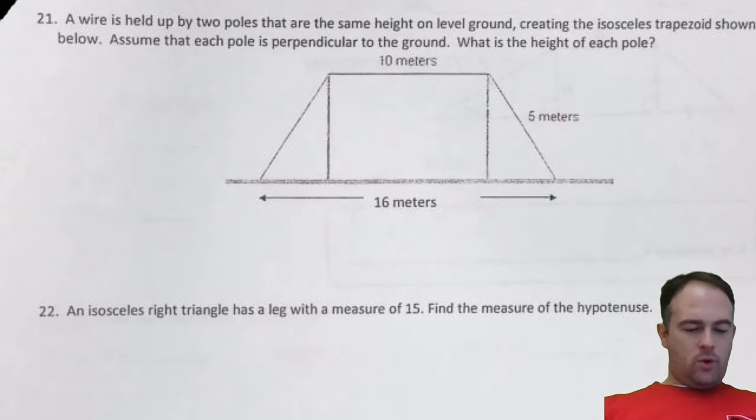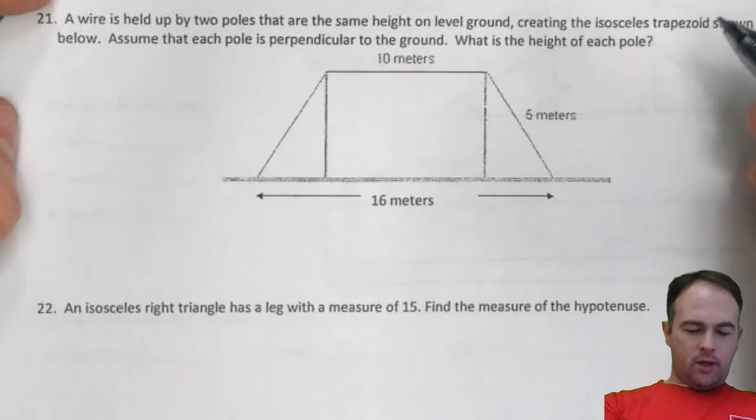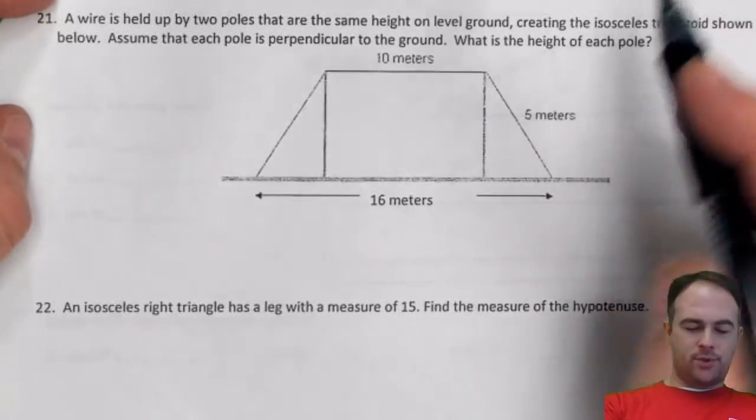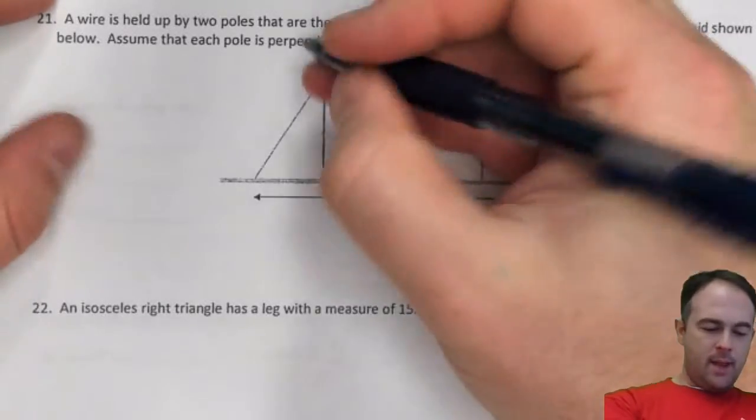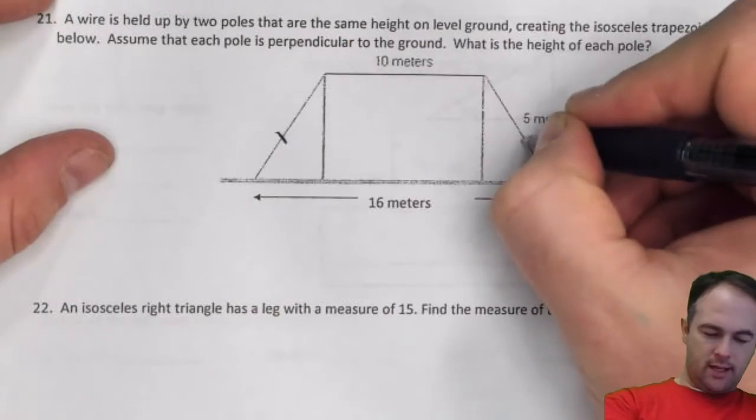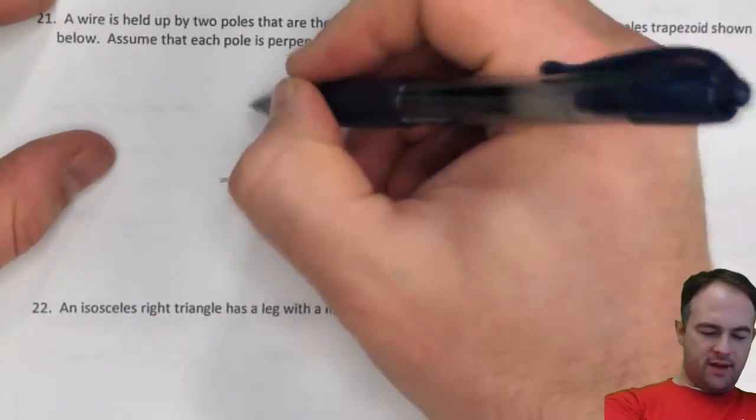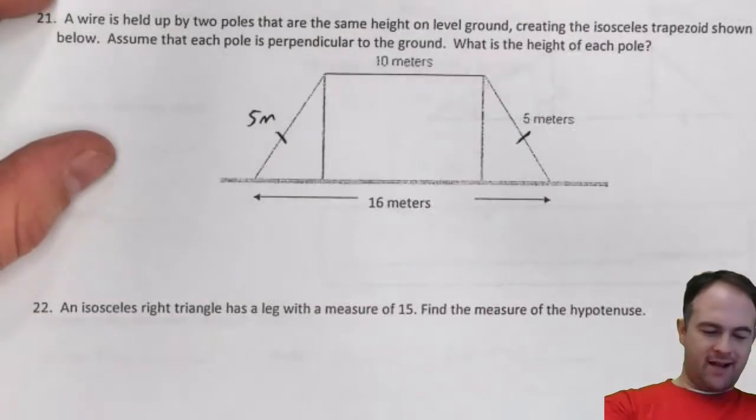A wire is held up by two poles at the same height, creating an isosceles trapezoid. Now remember, an isosceles trapezoid means that the two legs of the trapezoid are congruent, meaning that that's 5 meters, this one is also 5 meters.